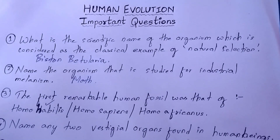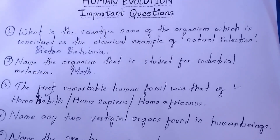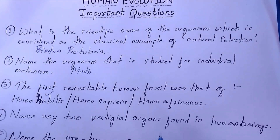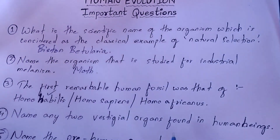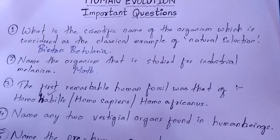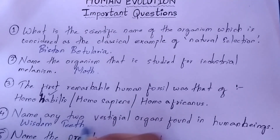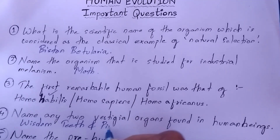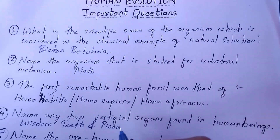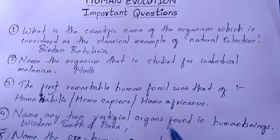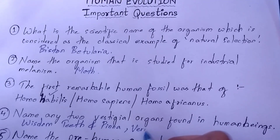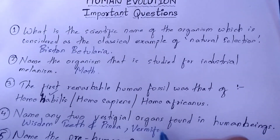The next question: name any two vestigial organs found in human beings. This is a very important question which is asked most of the time. The two vestigial organs found in human beings are wisdom teeth and pinna, which is a part of the human ear. Besides this, you can also write vermiform appendix — you can write any two of these.